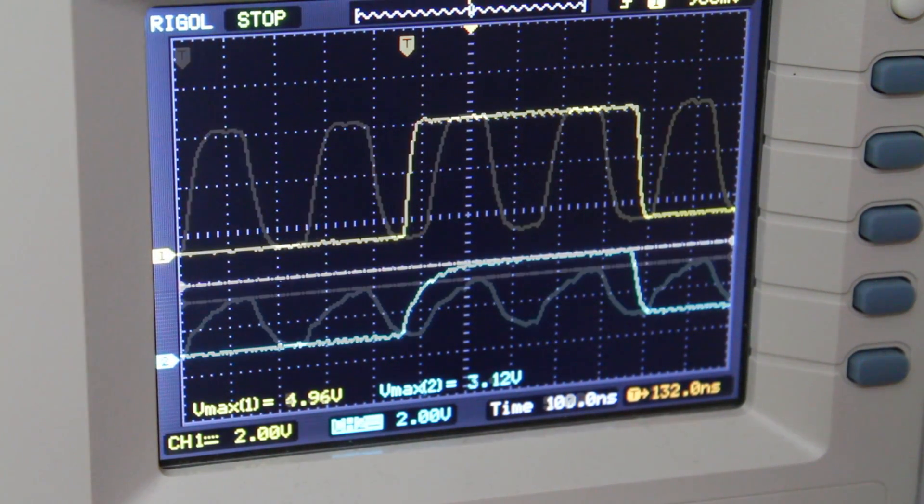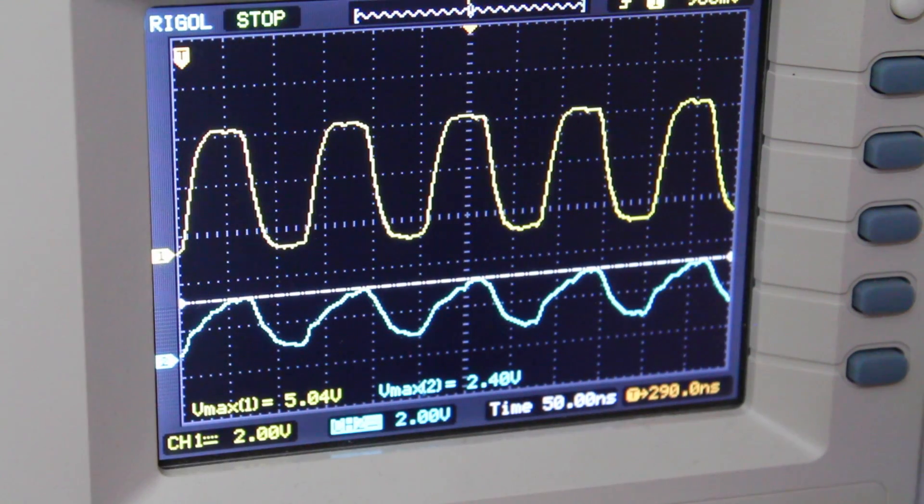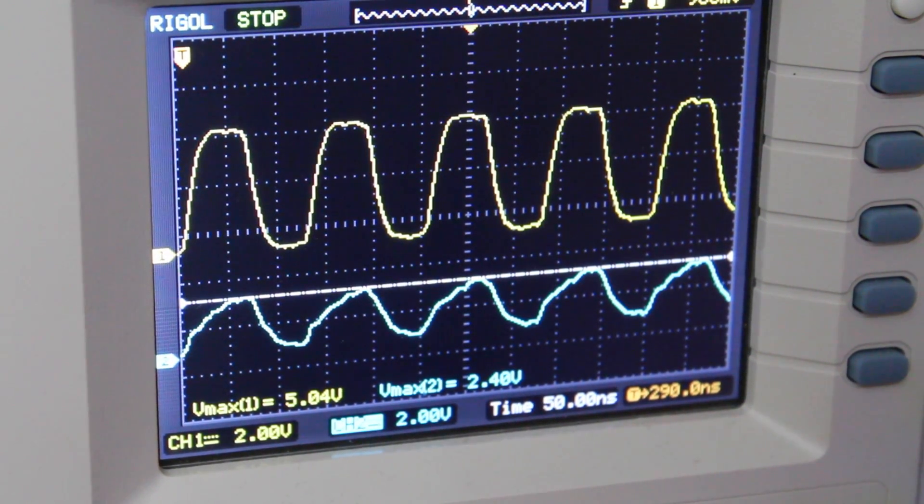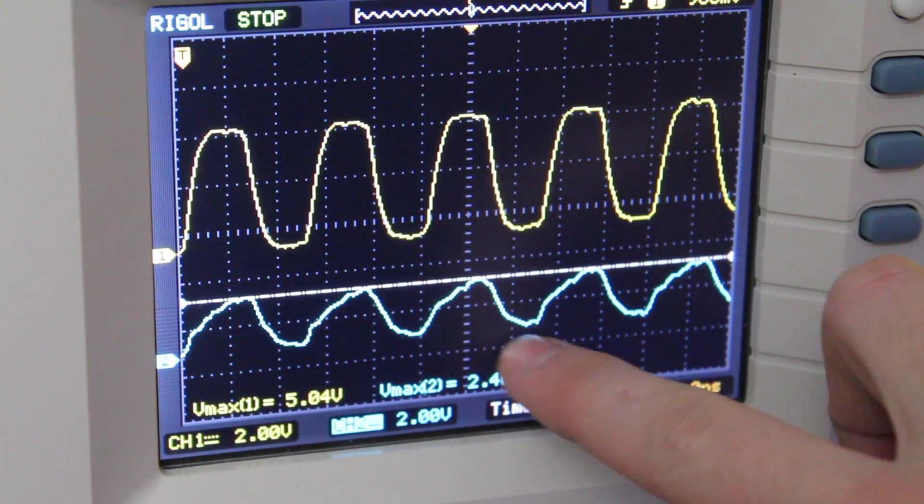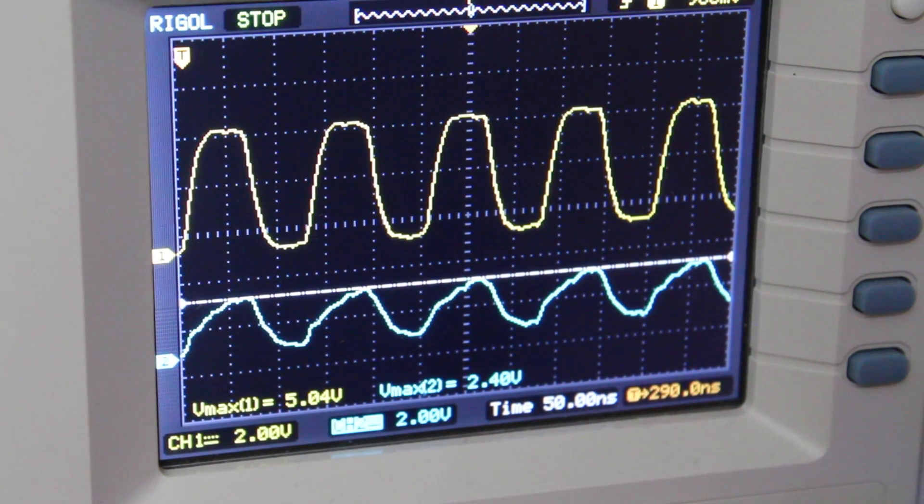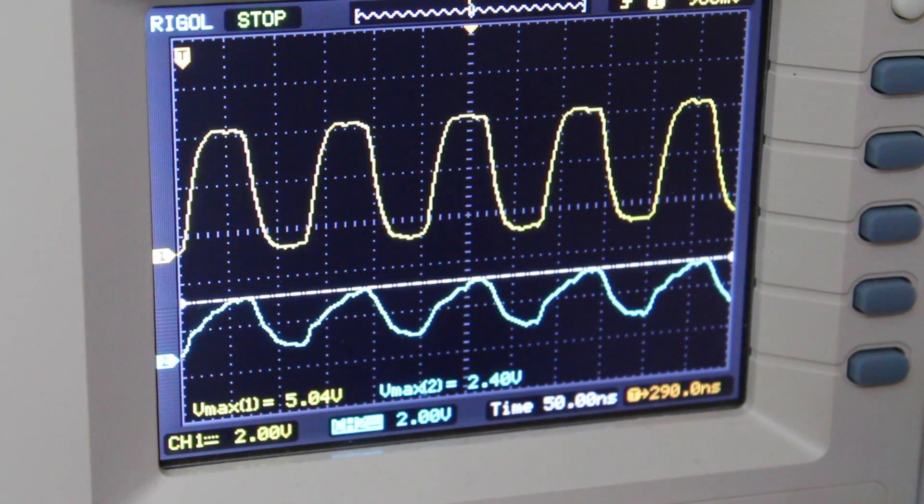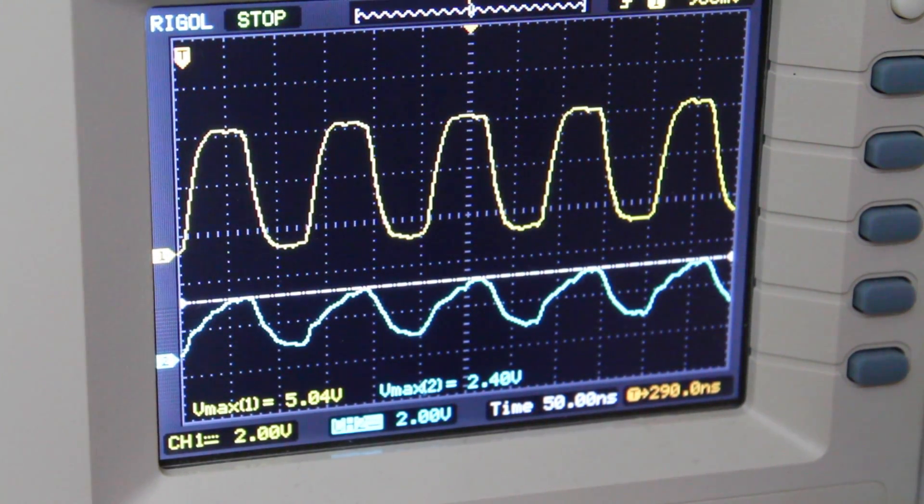Here we are at eight megahertz and it does appear to be tracking the input signal, but now that rise and fall time is playing a huge role. I wouldn't trust this as a good level shifter for an eight megahertz signal. Let's move on to the MOSFET method.